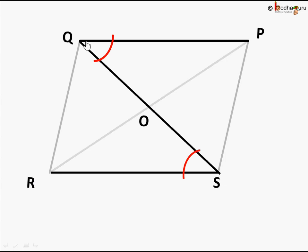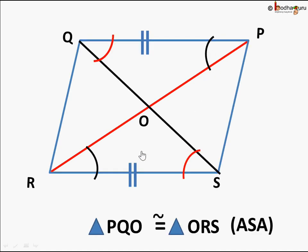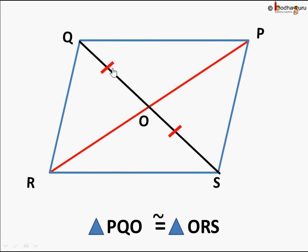This is one parallel line, this is another parallel line, and this is a diagonal cutting both of them. This interior angle is equal to this angle. So triangle PQO is congruent to triangle ORS using the angle-side-angle rule: this angle equals this angle, this angle equals this angle, and this side equals this side — so angle-side-angle equals angle-side-angle.